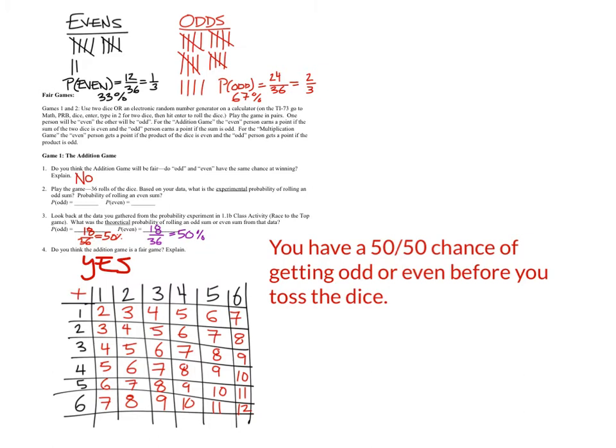To clarify: it's a 50% chance for each outcome — not a 100% chance. It's like a ratio: 50% chance for odd, 50% chance for even.